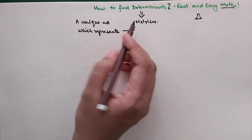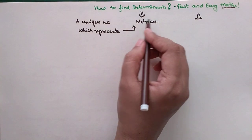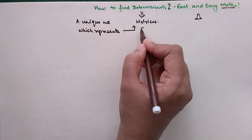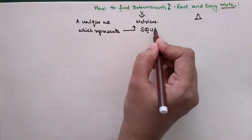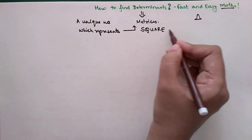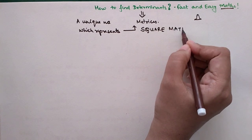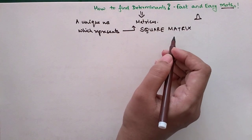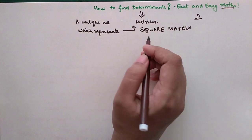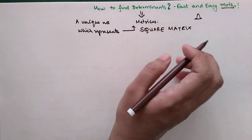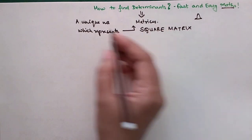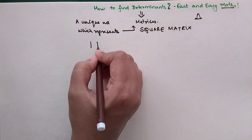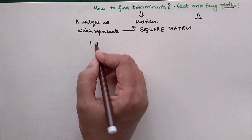Whenever you have to find a determinant, you can find it only and only of a square matrix. Please understand — if the matrix in question is not a square matrix, then you won't be able to find a determinant.